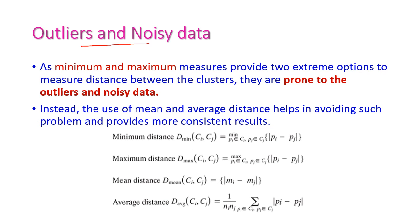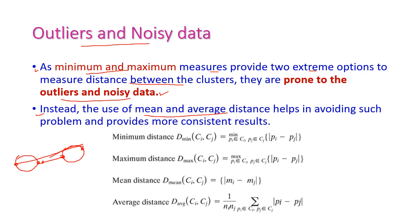Regarding outliers and noisy data: the minimum and maximum distance measures provide two extreme options to measure the distance between clusters — Dmin and Dmax — and these are prone to outliers and noisy data. Using mean and average distance instead helps avoid these problems and provides more consistent results. If we use the mean or average point to measure distance between two clusters, the outliers cannot influence the clustering.